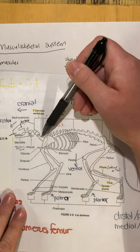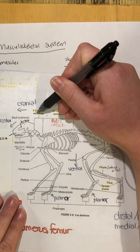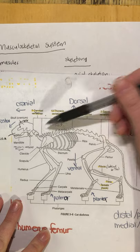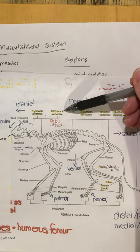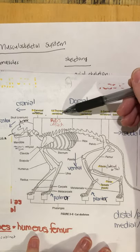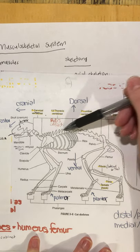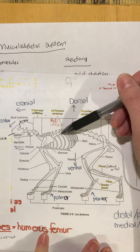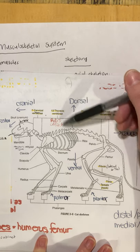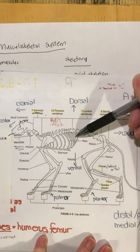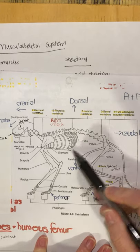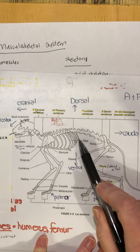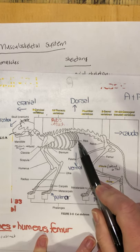The cervical vertebrae make up the neck — 'cervic' meaning neck. Moving more caudal, we have the thoracic vertebrae — 'thorac' meaning chest — these are the ones over the chest. The thoracic vertebrae are the ones all the ribs interact with. There are 13 thoracic vertebrae and 13 ribs. Most ribs are connected to the sternum or breastbone with cartilage, except for the last one — called a floating rib.